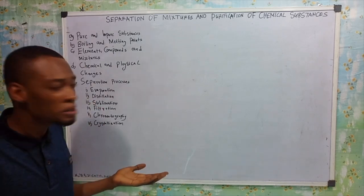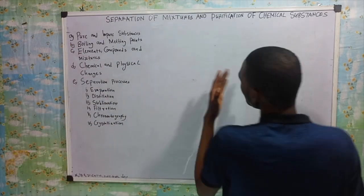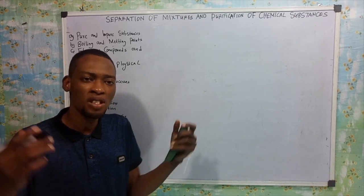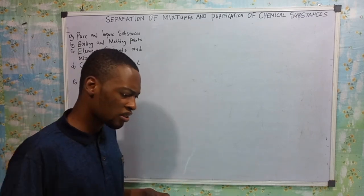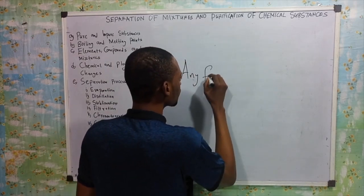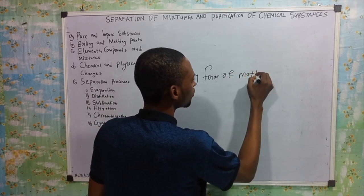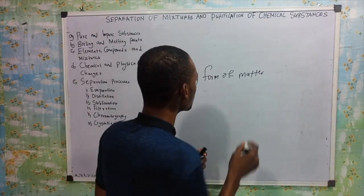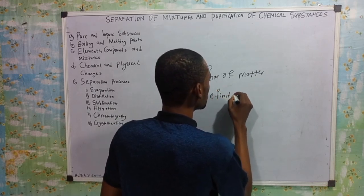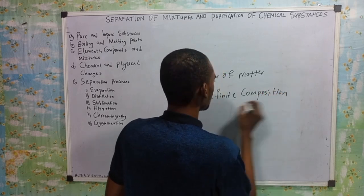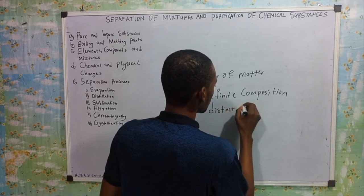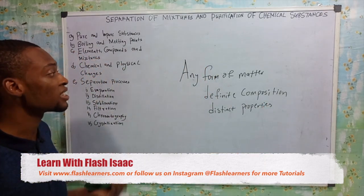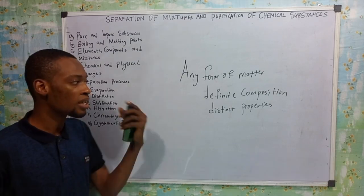Okay, let's look at that. What is a substance? A substance is any form of matter that has definite composition and distinct properties. This definition brings some things to the table: definite composition and distinct properties. So once again, a substance is any form of matter which has definite composition and distinct properties.